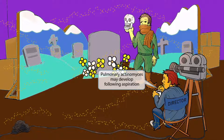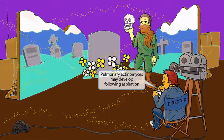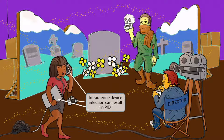Now let's bring in the director. He's sitting in his director's chair and was enjoying some coffee when he accidentally aspirated some of his drink. You can see that he's coughing it up and little drops of coffee are starting to fly into the air. We've included this part of the image to help you remember that pulmonary Actinomyces can develop following aspiration.